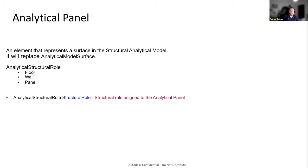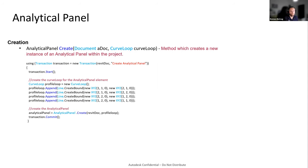Now let's talk about AnalyticalPanel — the new analytical surface element, which will replace AnalyticalModelSurface. We defined structural roles like floor, wall, and panel — this list is fixed but we plan to allow users to edit it in the future. The Create method receives a curve loop that must be planar, not self-intersecting, and should not contain zero-length curves. Here's a small sample: create a curve loop, then call the creation method for an analytical panel.